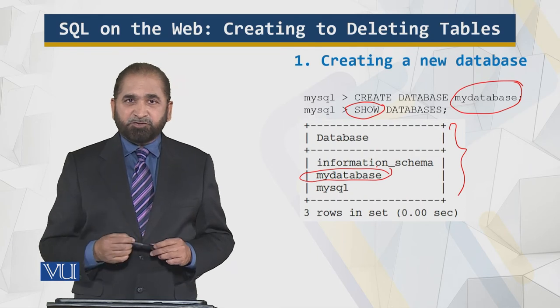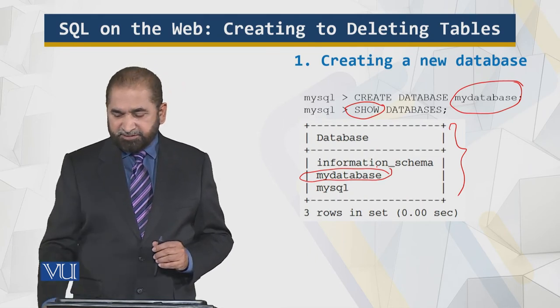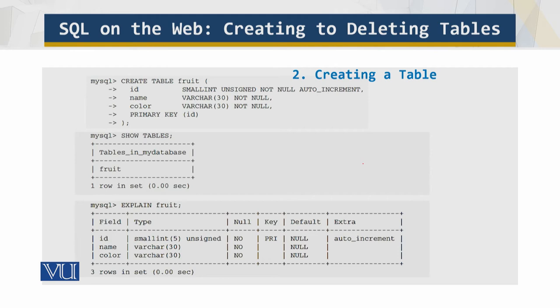Let's move ahead. So what we do now is that we create a table. This table has a primary key which is the ID over here. This is the primary key.